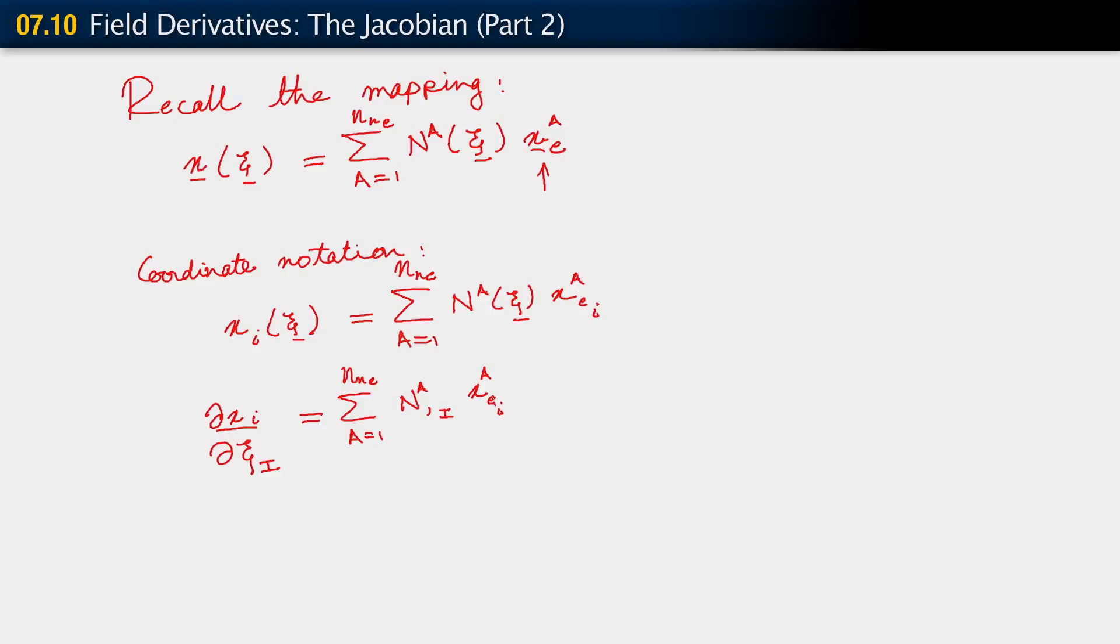You note that there is a proliferation of indices here. There are superscripts and subscripts all over the place. The subscript for the element e is just coming along for the ride here. It's really not doing much for us right now. So this is how we compute this derivative.